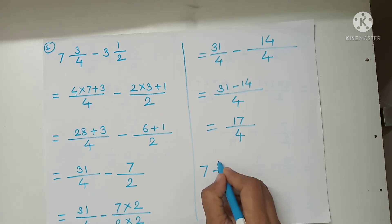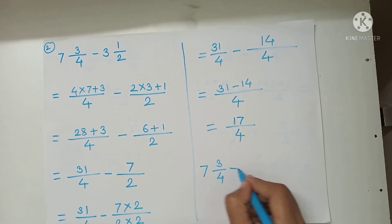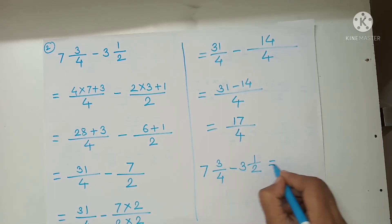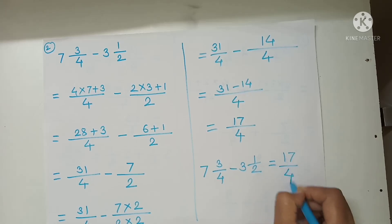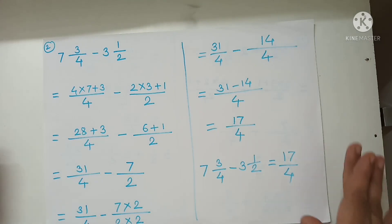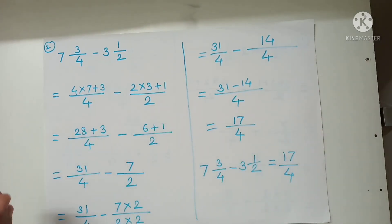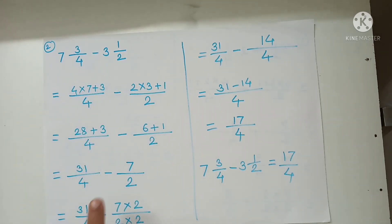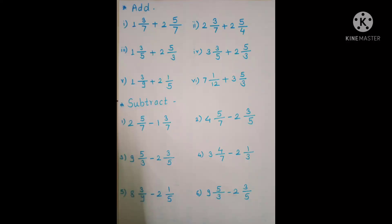So, 7 and 3 upon 4 minus 3 and 1 upon 2 is equal to 17 upon 4. The same procedure applies for both addition and subtraction of mixed numbers — convert to improper fractions first, then make the denominators the same, then add or subtract. Solve these addition and subtraction problems in your maths notebook.